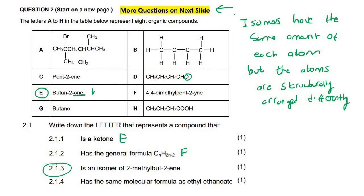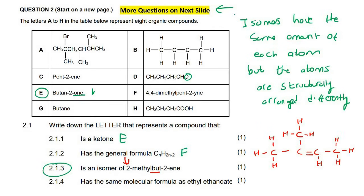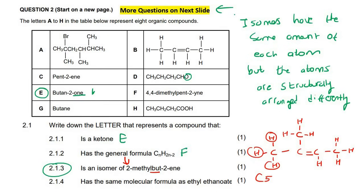2-methylbut-2-ene is a 4-carbon molecule in the main chain because of BUT. On carbon number 2 there is a double bond, and on carbon number 2 there is also a methyl branch, which is a 1-carbon branch. Filling in hydrogens everywhere else, we count 1, 2, 3, 4, 5 carbons. Then counting hydrogens: 1, 2, 3, 4, 5, 6, 7, 8, 9, 10 hydrogens.